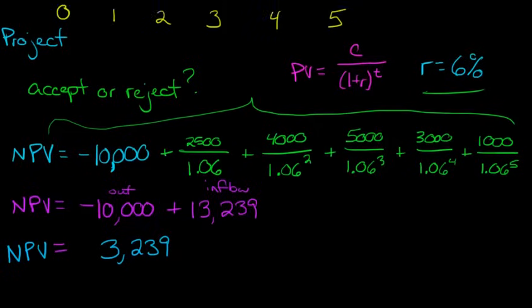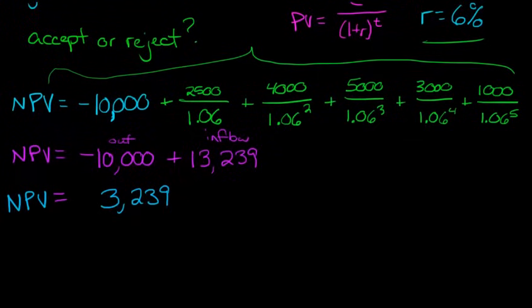And that's going to give us $3,239 is the net present value of this project. Well, what does that mean and how to interpret it? Well, in general, assuming that the company has enough cash to do the project, what you want to do is you want to use a kind of rough rule here of if the NPV is greater than zero, then accept the project. Accept.